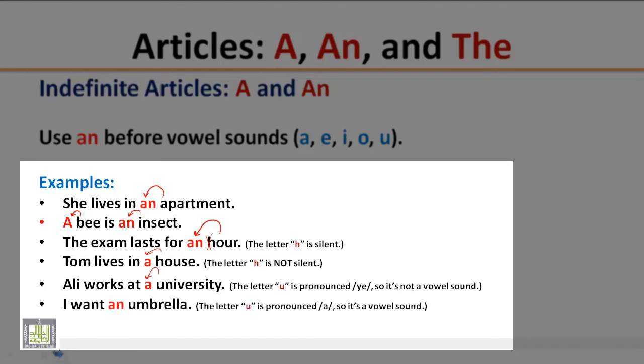I want an umbrella. The word umbrella starts with the letter u, but it is pronounced a. A is a vowel sound, so it is preceded by an, an umbrella.